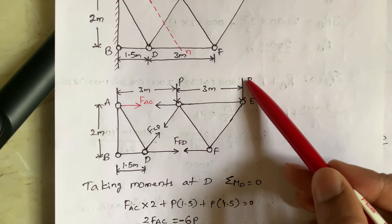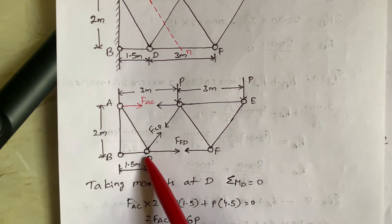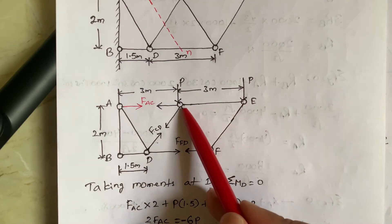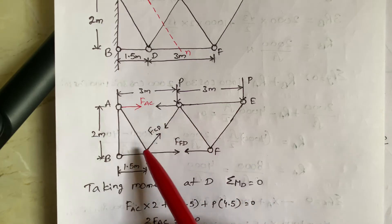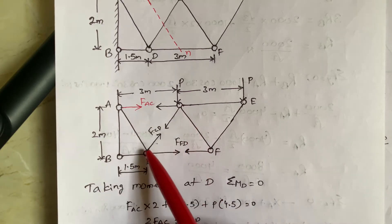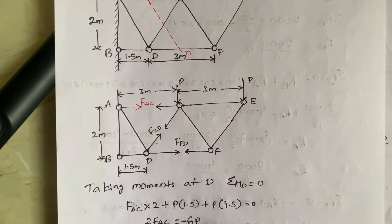Like that, from this P, P into up to here. From here to here, it is 3 meters. From here to here, I mean, here to here, it is 1.5. Total 4.5.